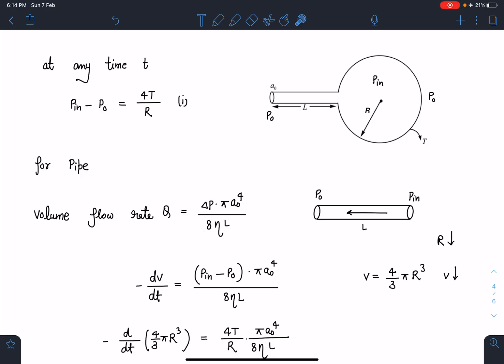For the pipe, this volume flow rate is given by Q = Δp × πa⁴/8ηL. This is the pipe here and from here to here this air movement will take place.